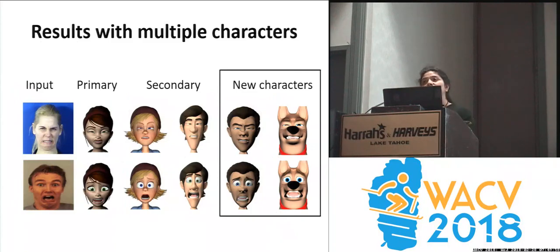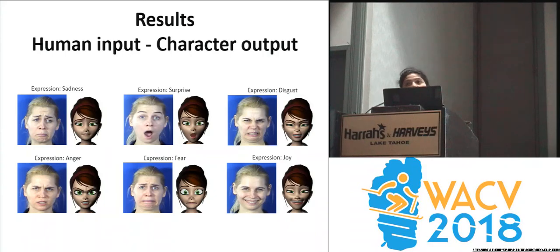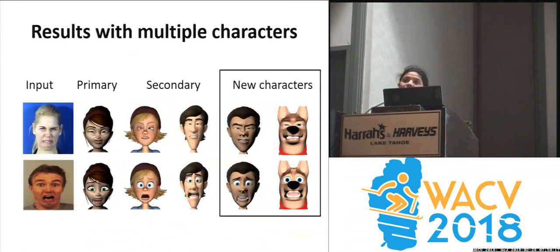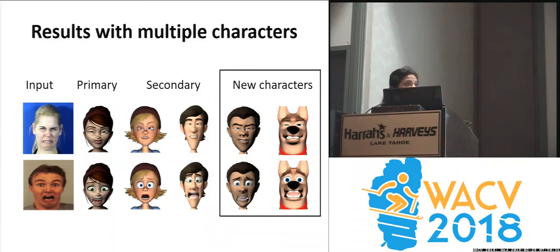This is the most exciting part of the talk — the results. We've shown the six cardinal expressions for human expression transfer to stylized characters: sadness, surprise, disgust, anger, fear, and joy. This is the primary character transfer, going from human to one single character. We generalize our method using a lightweight system to transfer the expression from one character to multiple secondary characters, as shown here. The new characters shown on the right side include a non-human character, which is a dog. It's not part of the dataset, and we show that our results generalize well for expression transfer from humans to characters.